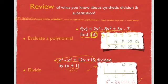Remember also that when you have a remainder, you write it over whatever it was you were dividing by. In this case, it was x plus 1.